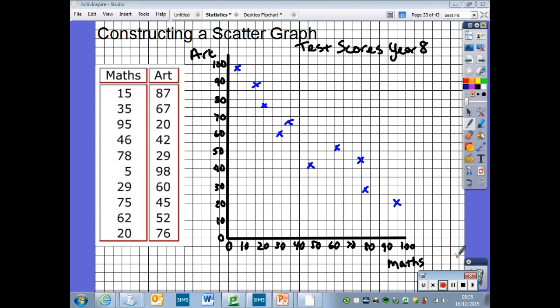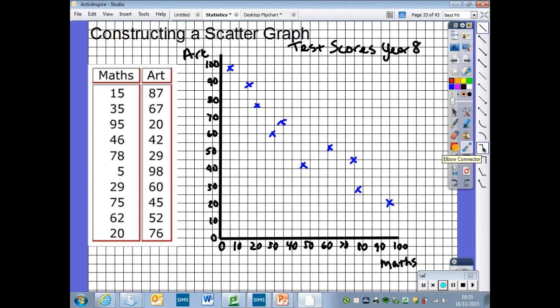So can we draw one straight line which shows the general direction of the crosses we plotted? If so, then there is a link, correlation, and if not, then the results are random and not linked, uncorrelated. So we get a ruler and we draw a line through the centre of our coordinates, making sure that we have an even number of crosses above and below our line. And this is our line of best fit, and we can use this to estimate.